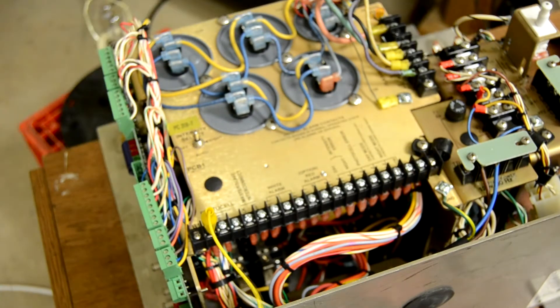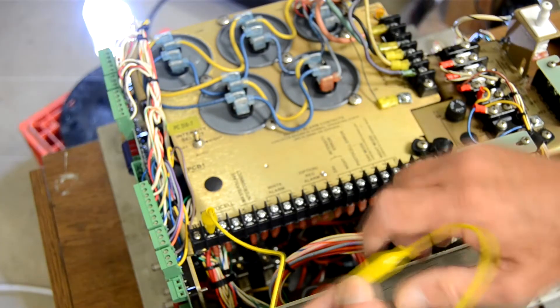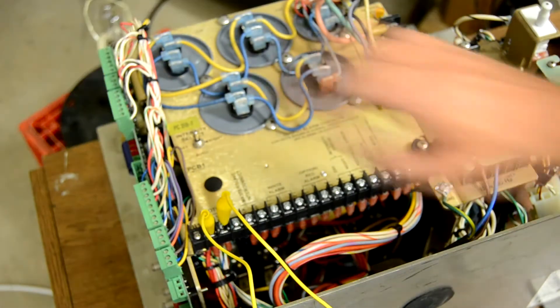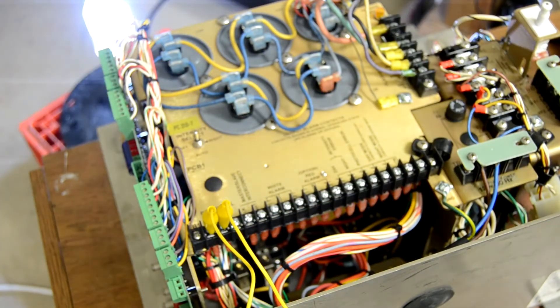Now I'm going to connect the jumper just to short the photo cell, so low resistance on it thinks that it's daylight, and it should soon switch itself into day mode.